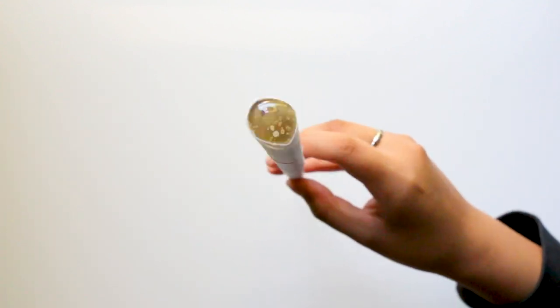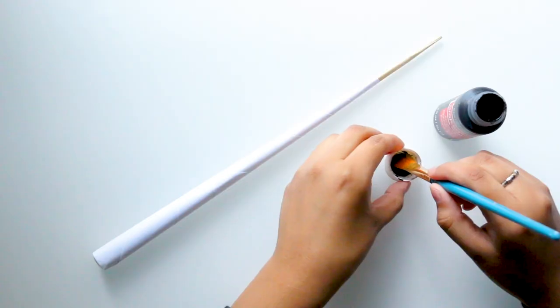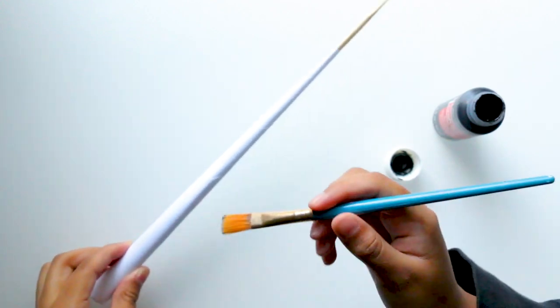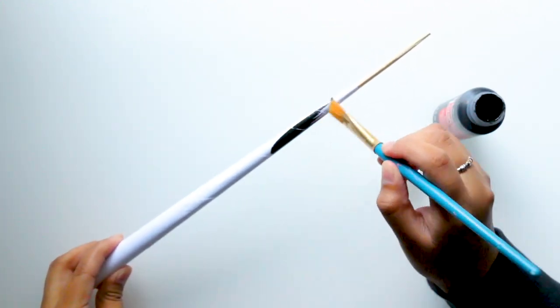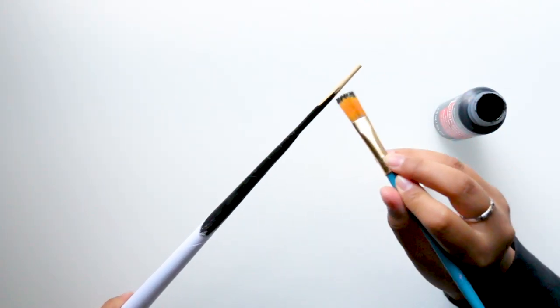Let it cool completely, then add any design you want. I didn't want a design for this one, so I skipped ahead to painting. Again, I painted the entire wand using black paint.